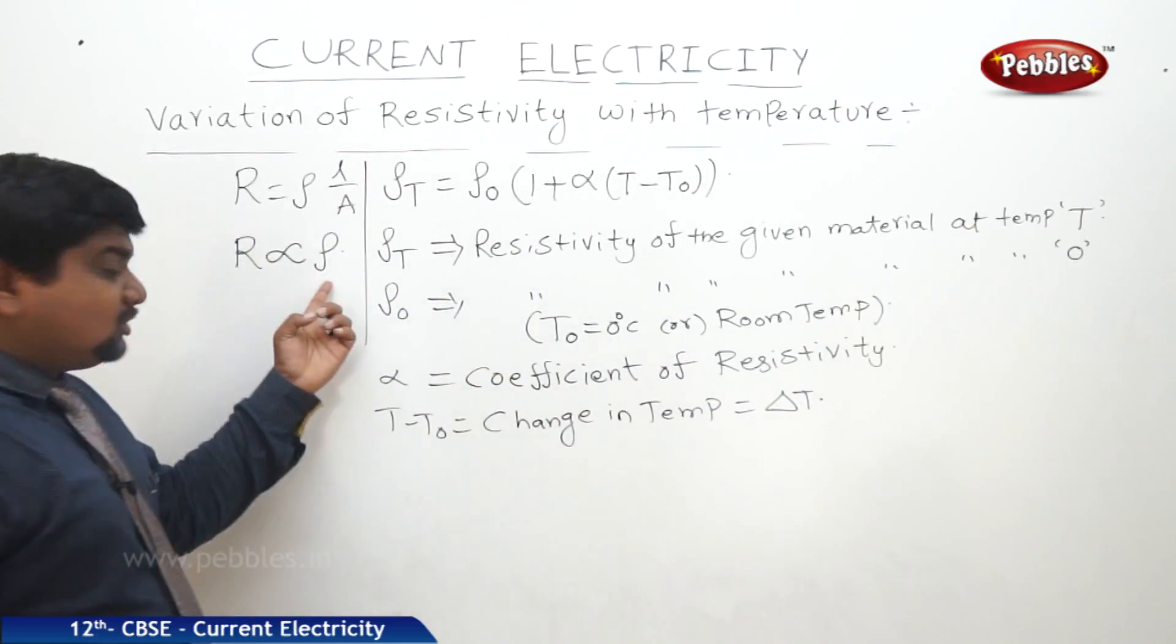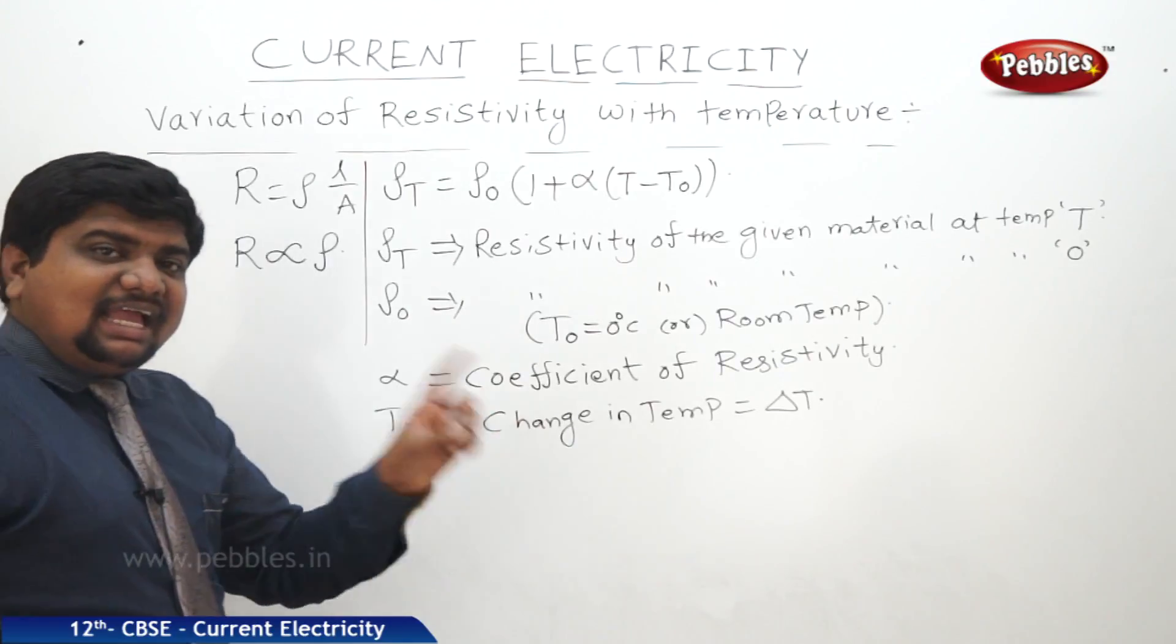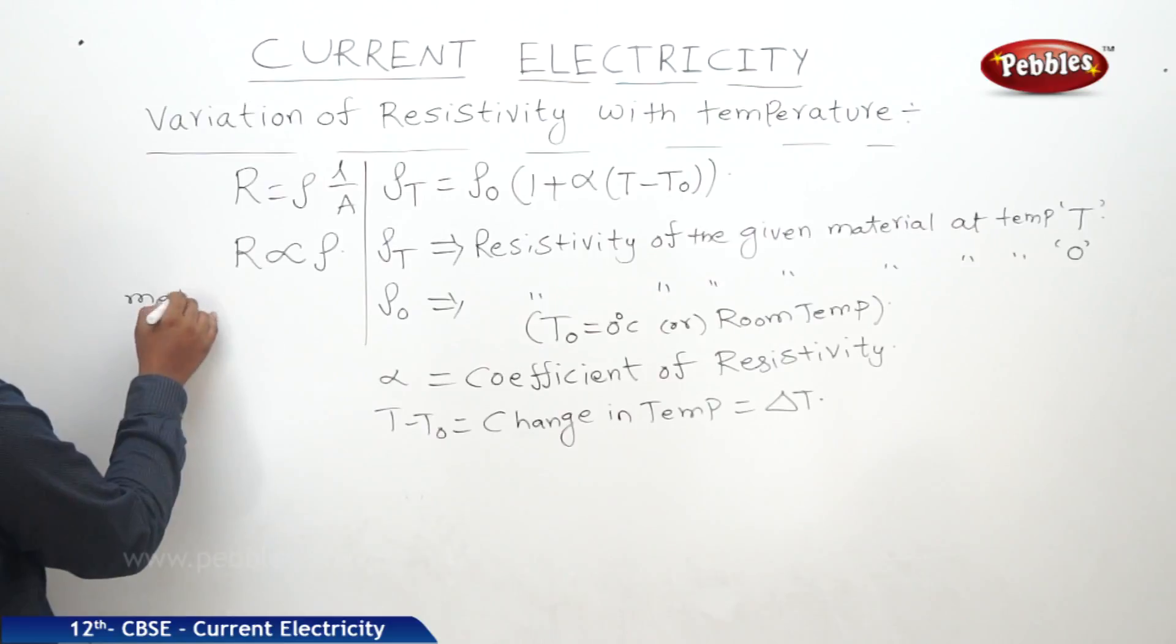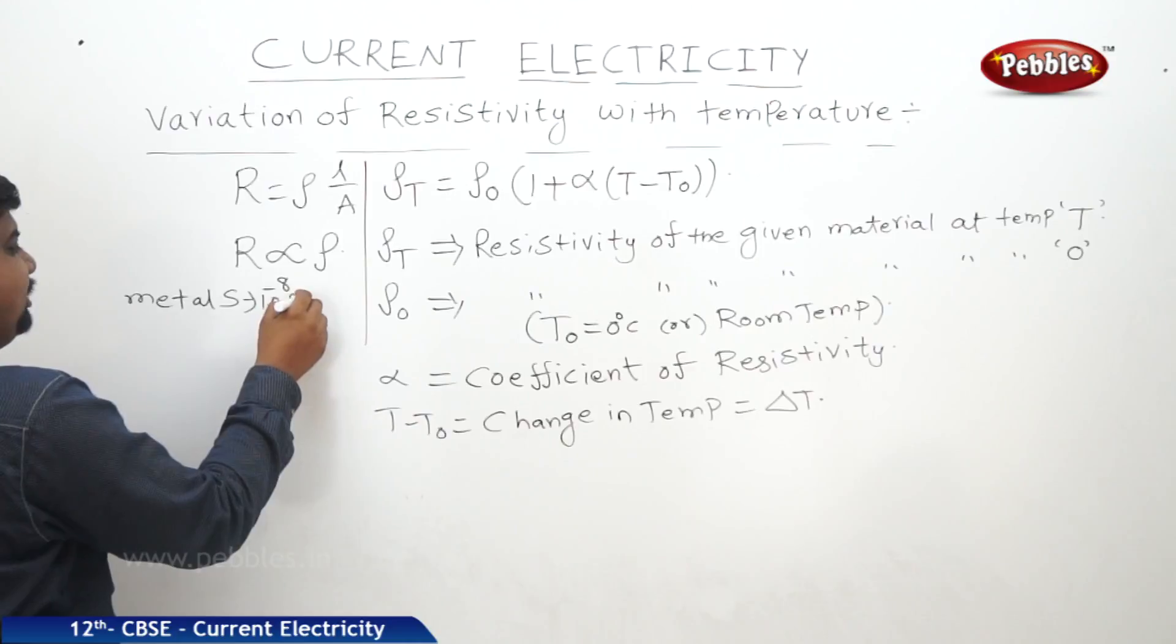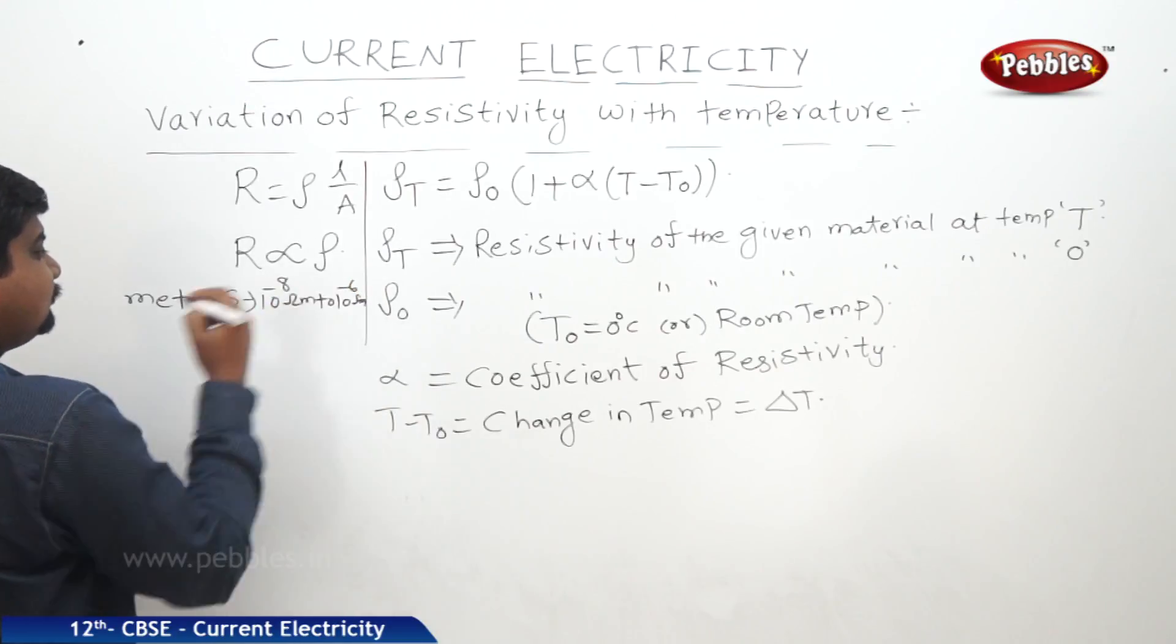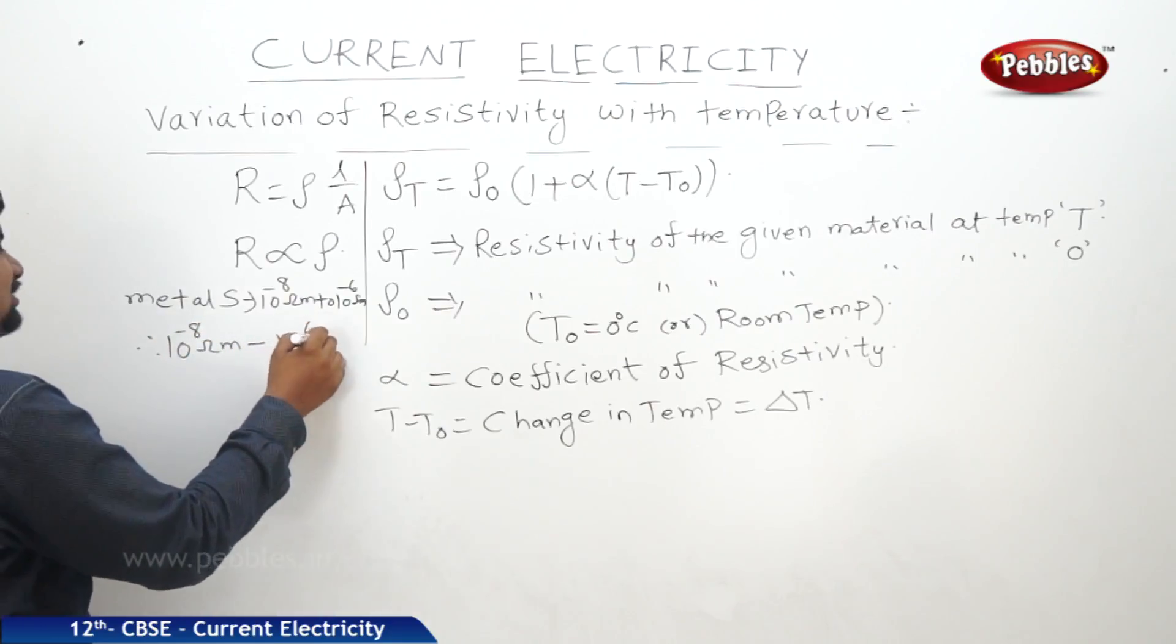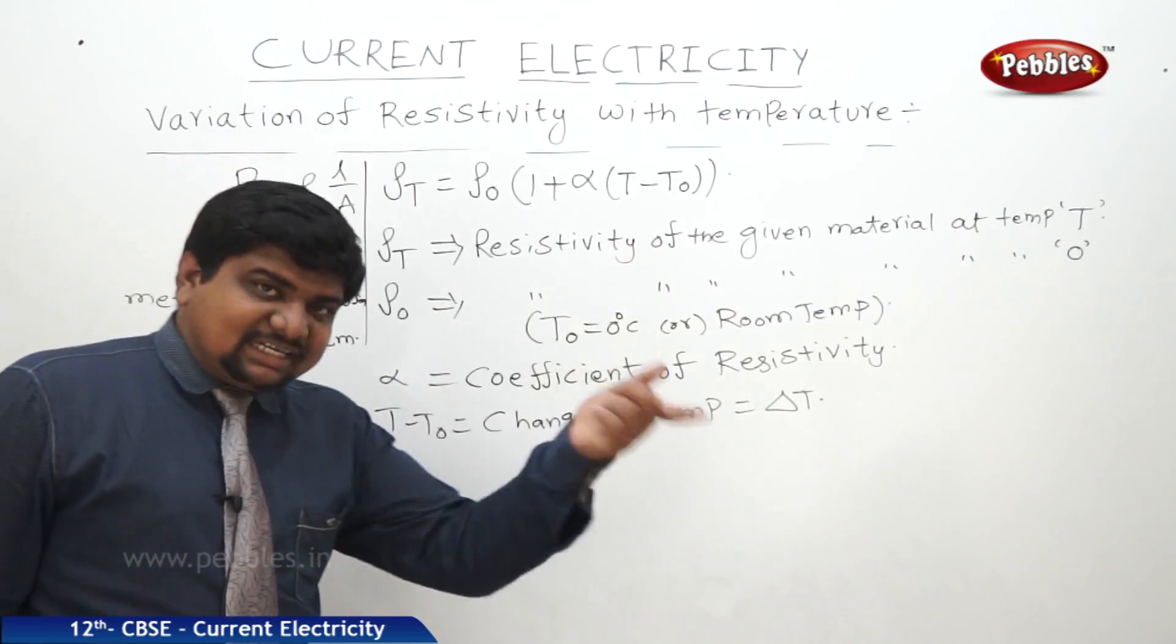Metals have resistivity from 10^-8 ohm meter to 10^-6 ohm meter. This is the resistivity of metals.